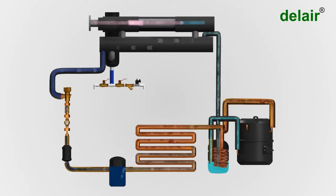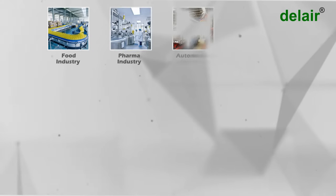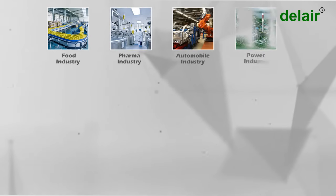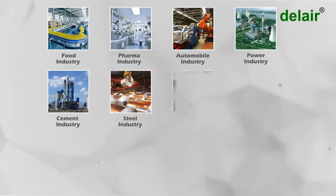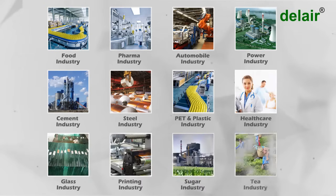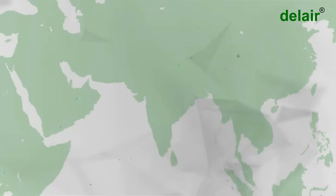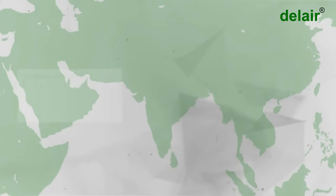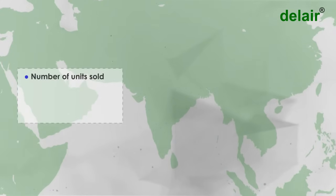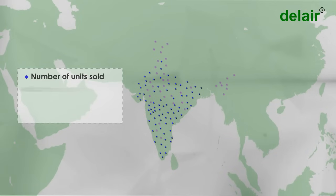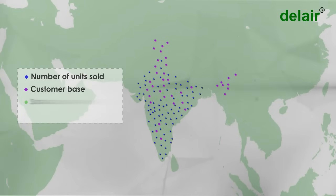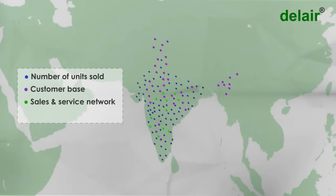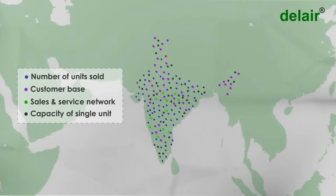The dry air can be used for desired applications in various industries like food, pharma, automobile, power, cement, steel, PET and plastic, and dozens of other industries. No wonder Del Air is largest in terms of number of units sold, customer base, sales and service network and capacity of single unit. Del Air India — the compressed air treatment system company.